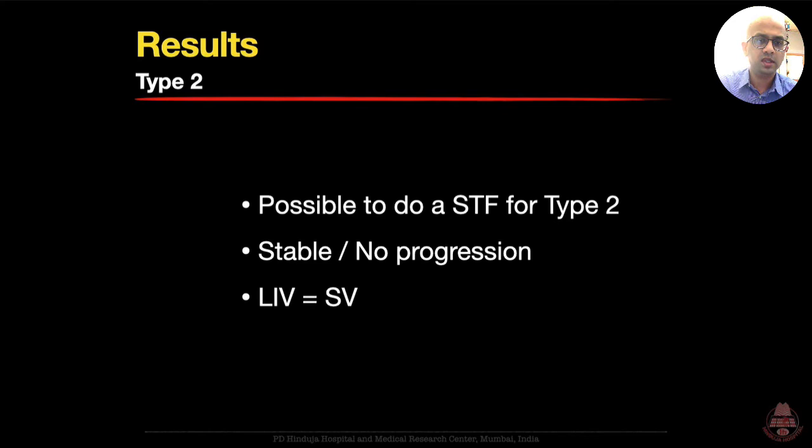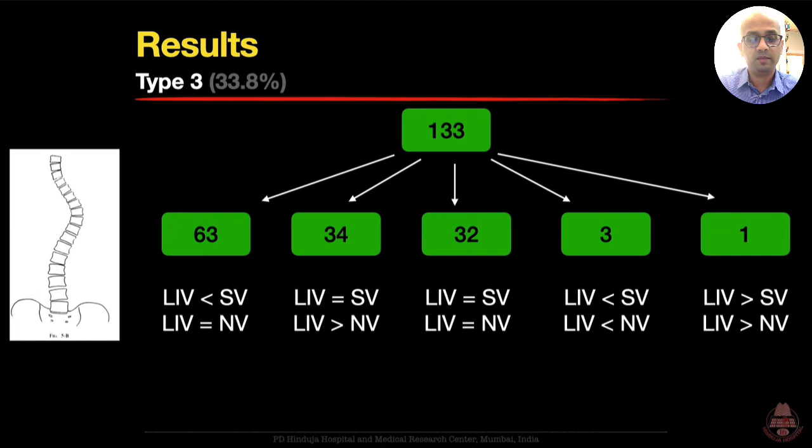The lesson learned is that selective thoracic fusion is possible for Type 2 curves where the thoracic is larger than the lumbar and the lumbar is more flexible than the thoracic, giving stable results without progression and with spontaneous correction of the lumbar curve at long-term follow-up, as long as the LIV is kept at the stable vertebra.